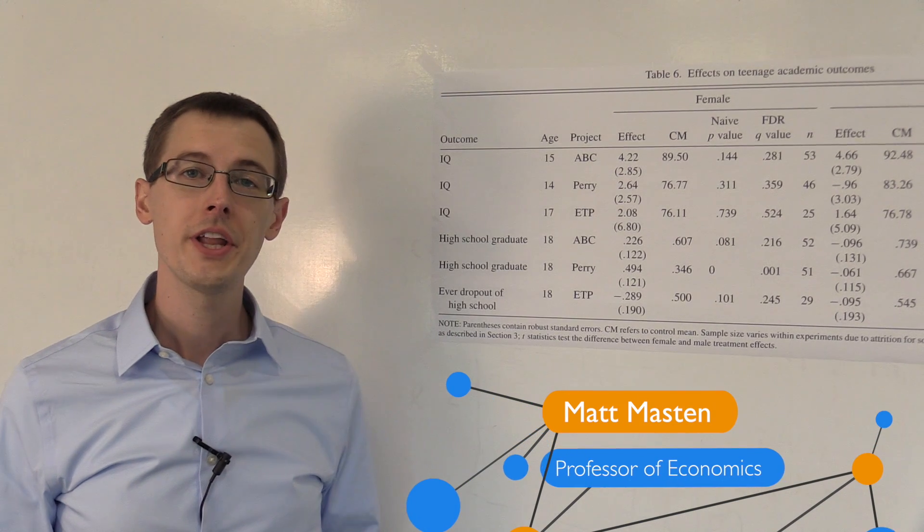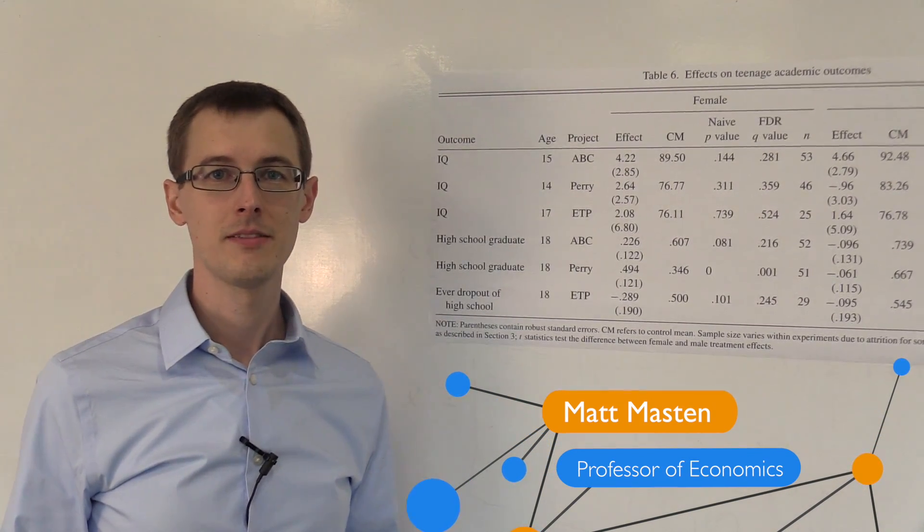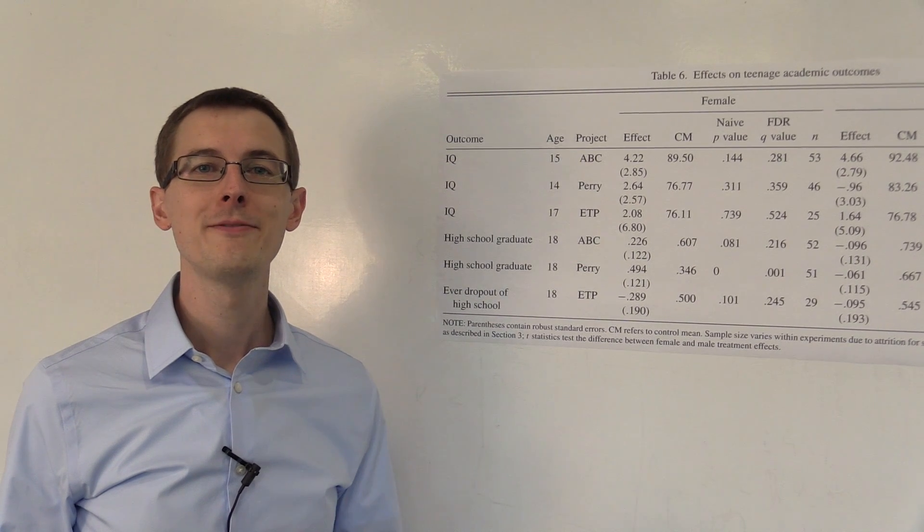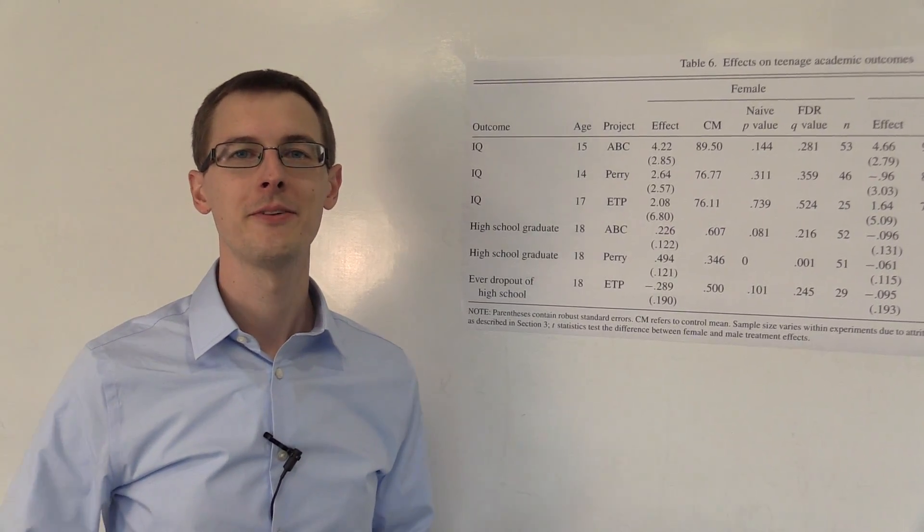In the Perry Preschool Experiment, there are only 123 students. In 1962 in the US, there were 25 million students between ages 0 and 5.